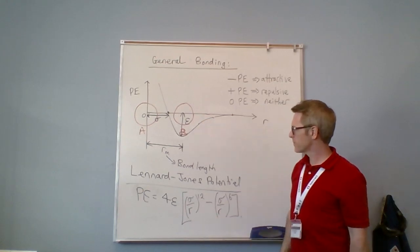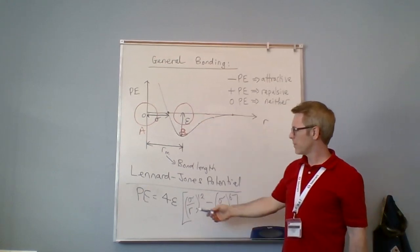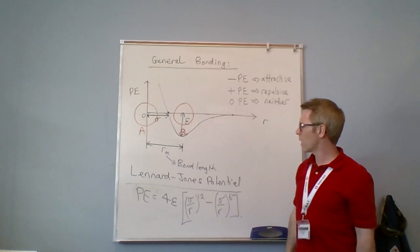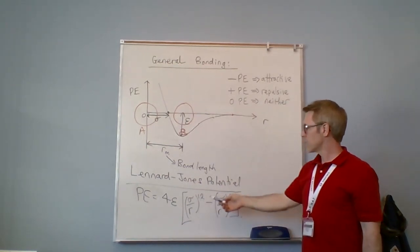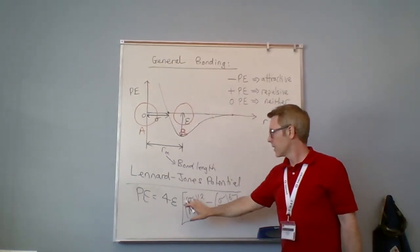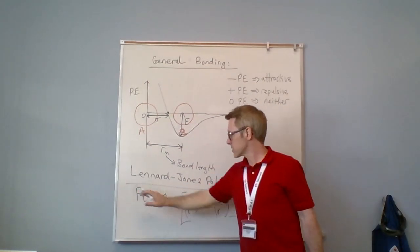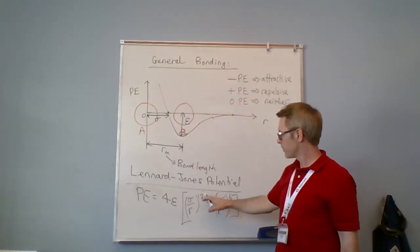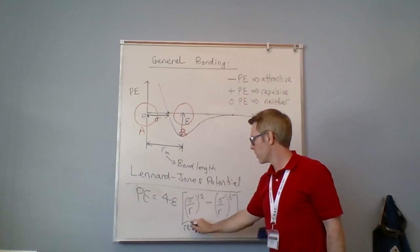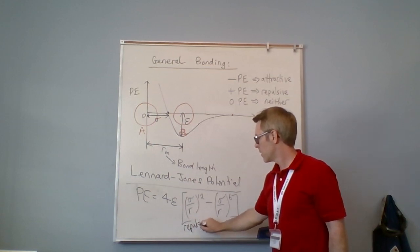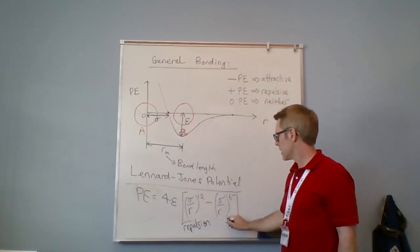Epsilon here is the deepest part of the well, and because we have this form here, we know that the overall potential energy is the sum of the repulsion and attraction.